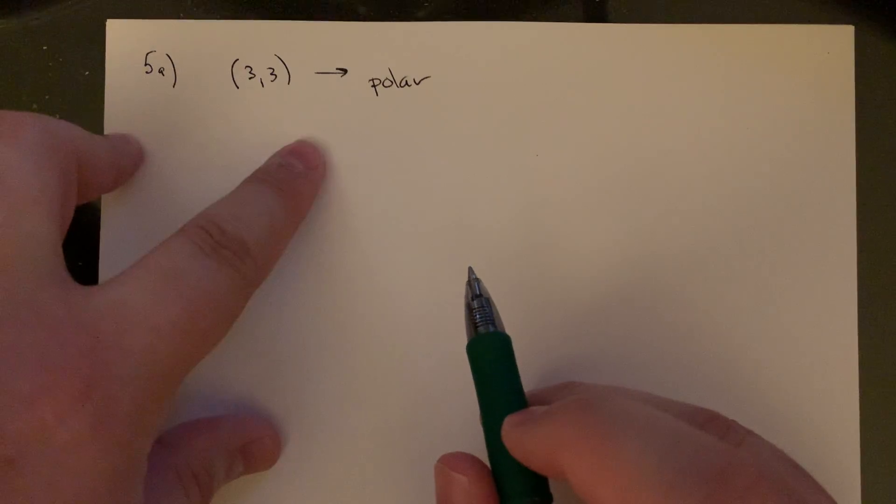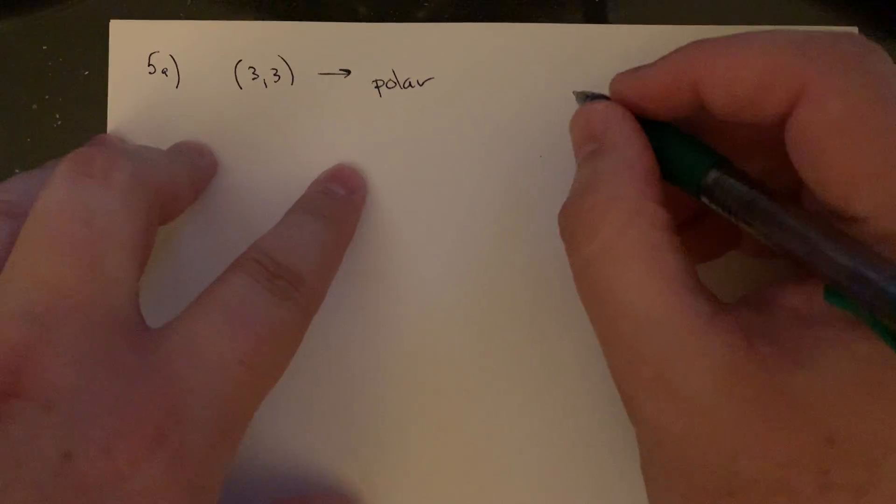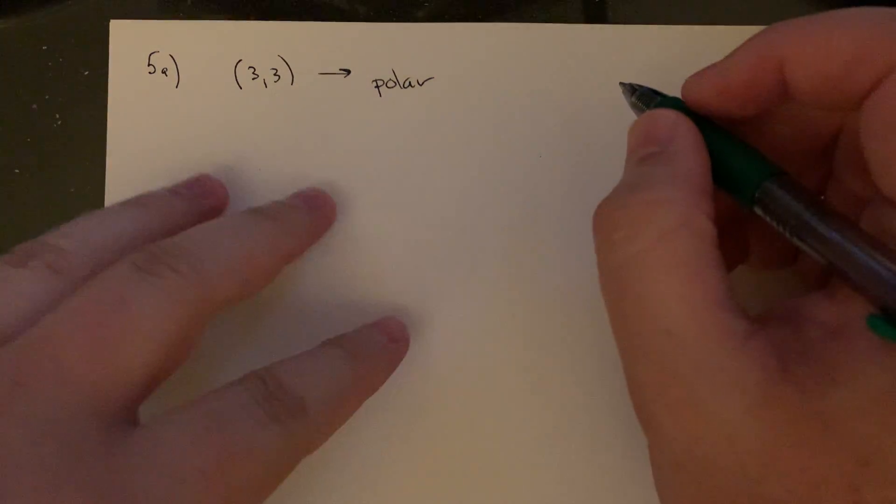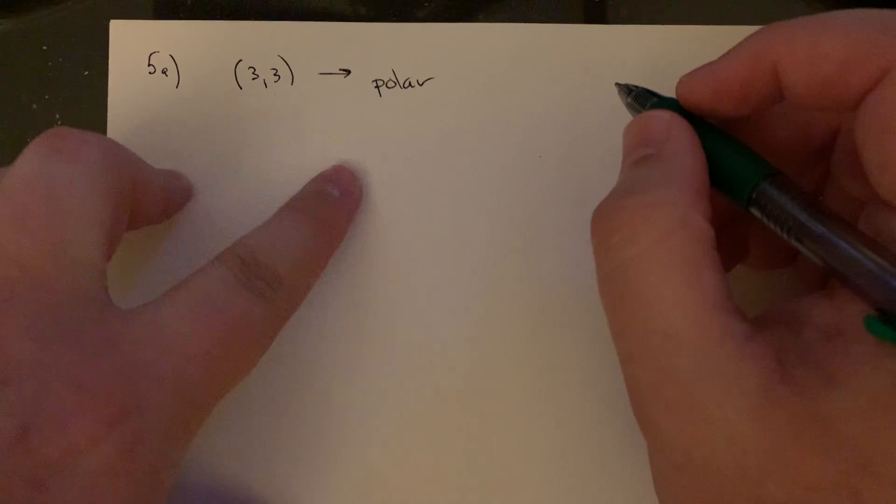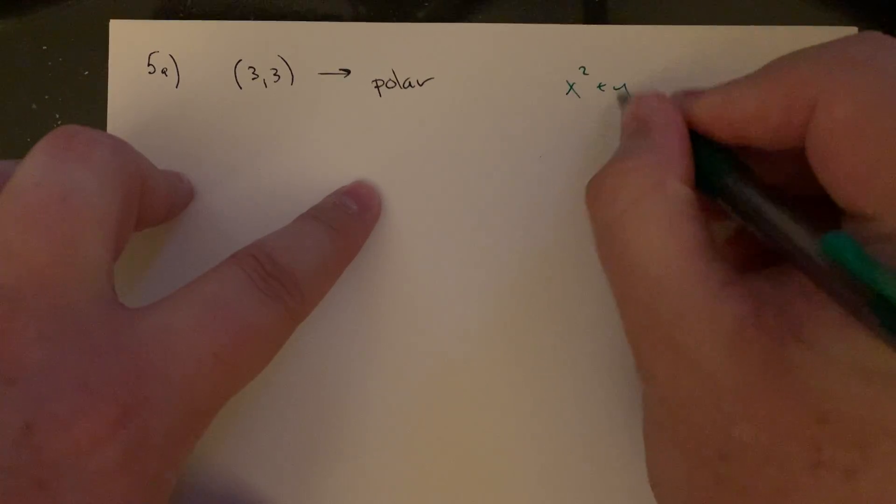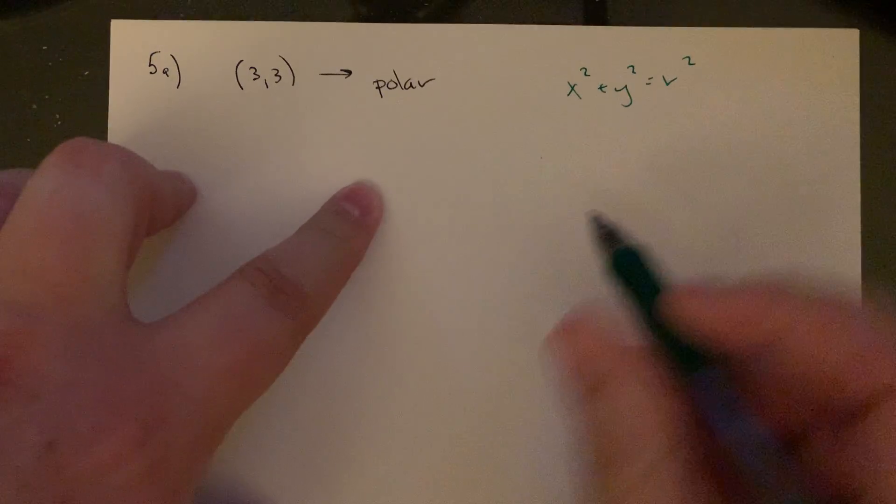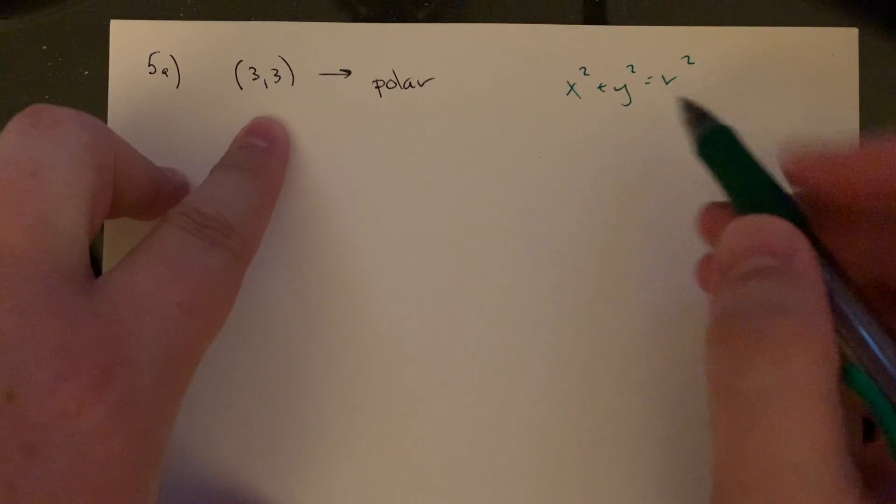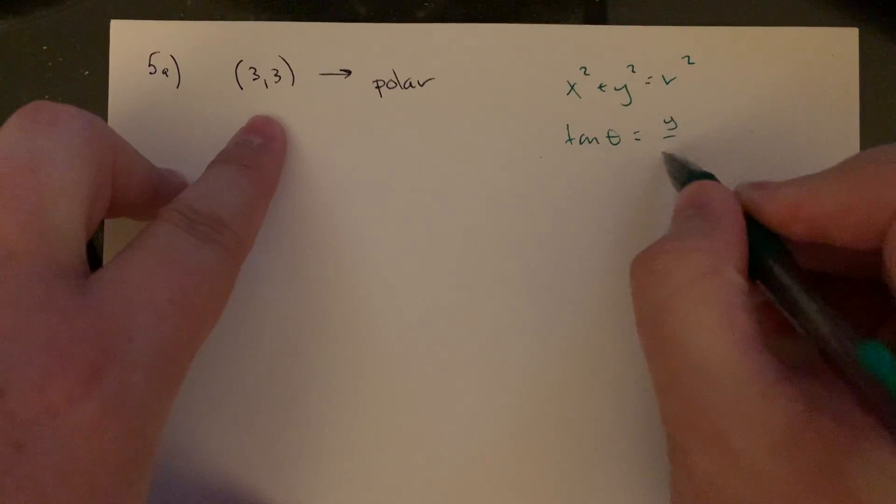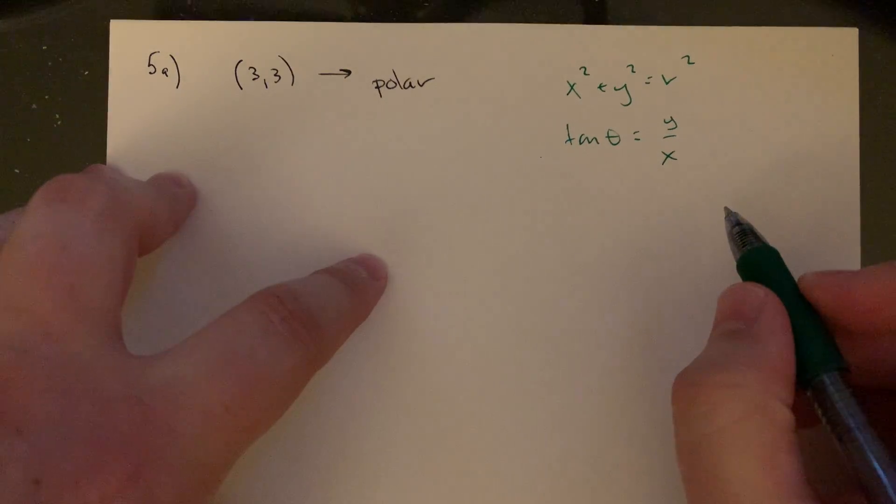The first one is (3,3) going into polar. So what we're going to use are the big four formulas we need. If we're going into polar, we need x squared plus y squared is r squared. So we know the x and the y, we need to find the radius.